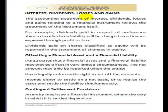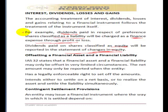Now let's look at the treatment of interest, dividends, losses, and gains under financial instruments. The accounting treatment follows the classification of the instrument itself. Under IFRS, we only have 'dividend paid' — there is no proposed dividend or dividend liability account. Dividends paid on redeemable preference shares are classified as a liability and charged as a finance expense through profit or loss. Dividends paid on ordinary shares or irredeemable preference shares go directly to the statement of changes in equity.